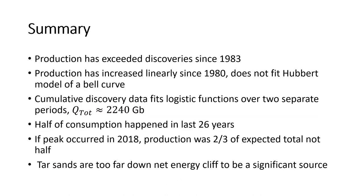In summary, up until the early 1980s, more oil was discovered than annual production requirements. Since then we've been outspending our income, draining our petroleum bank account. World oil production does not fit the basic premise of Hubbert's model and shouldn't be used to predict future supplies. Instead, cumulative discovery data gives a much clearer picture, showing that the era of large oil field discoveries is almost over. This will put an upper bound on production — cumulative production won't exceed total discoveries, but depending on political and economic events, production may fall considerably short of the total available. Half of all oil produced has been in the last 26 years, and if 2018 turns out to be the true peak of production, then we were about two-thirds of the way through the total at that time. Finally, tar sands don't appear to be a viable long-term alternative. I hope this has been informative, and thanks again for watching.